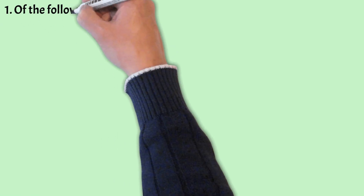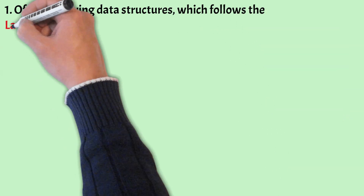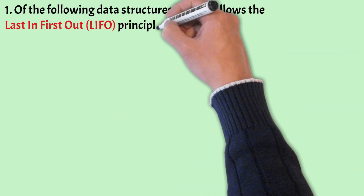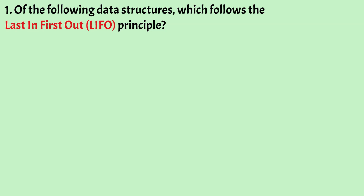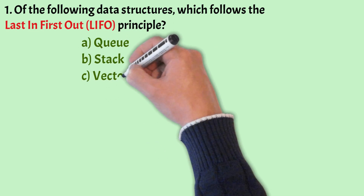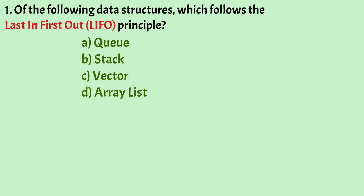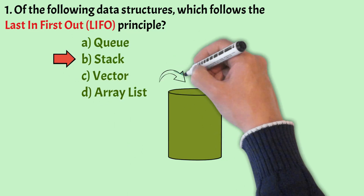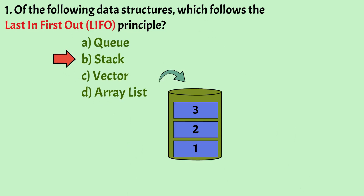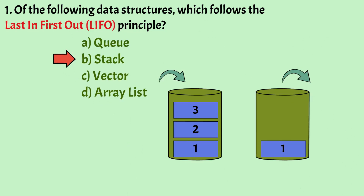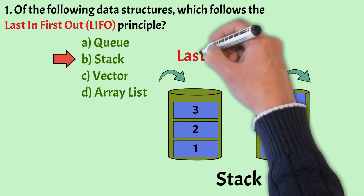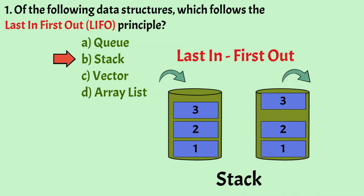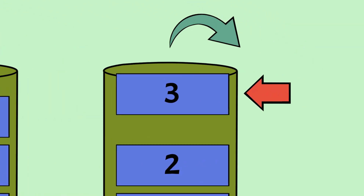Let's begin with the first one. Of the following data structures, which follows the last in first out principle? The options are: Queue, Stack, Vector, ArrayList. The correct answer is Option B, that is Stack. The Stack is a linear data structure that follows a particular order known as last in first out, that is LIFO, where the last element that was inserted will be the first one to be removed.